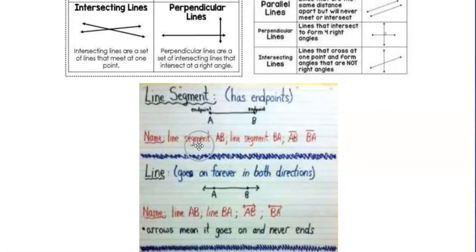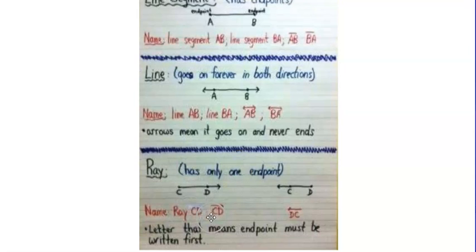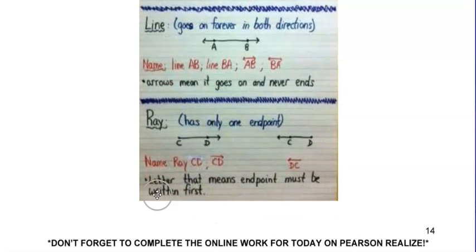Here are a couple more examples that talk about how you can name these lines. This would be line AB — you could call it line BA going backwards — and you can show it by putting a line symbol above AB or BA. For a ray, you'd name it ray CD, and it only has an arrow on one side. The endpoint letter must be written first, so you write C first and D second because D is the side where it continues.